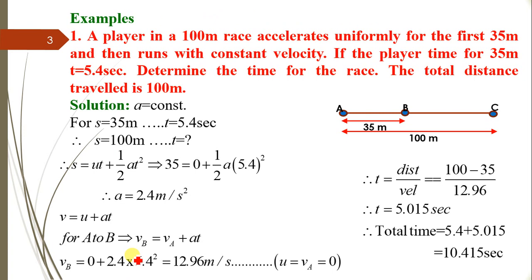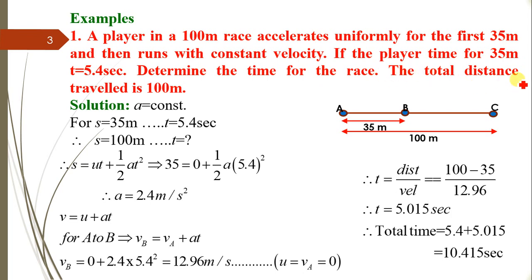The first example: a player in a 100-meter race accelerates uniformly for the first 35 meters and then runs with a constant velocity. If the player's time for the first 35 meters is 5.4 seconds, determine the time for the entire race. The total distance is 100 meters.